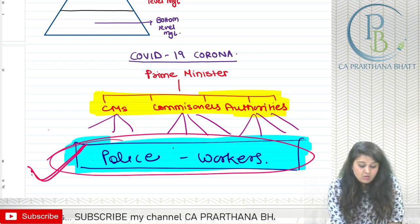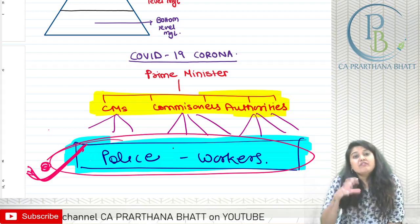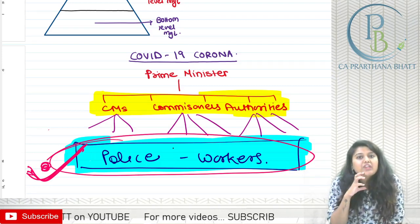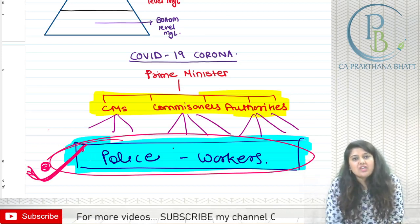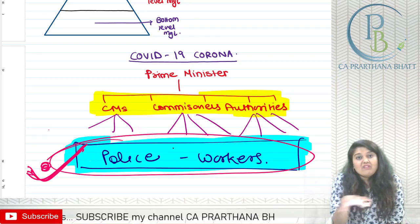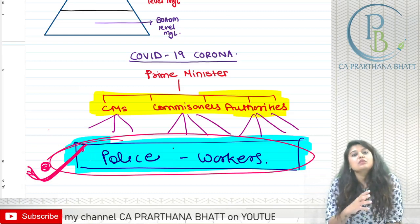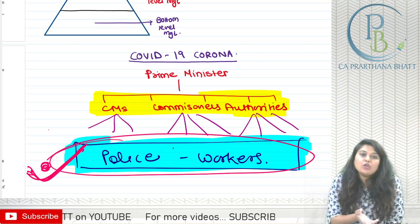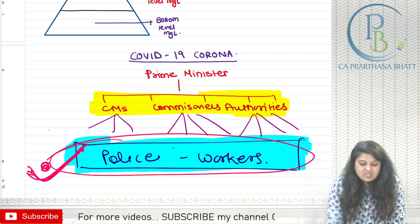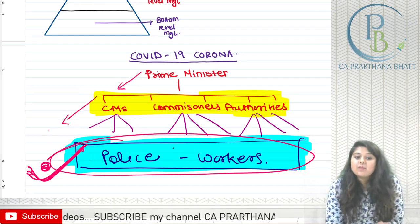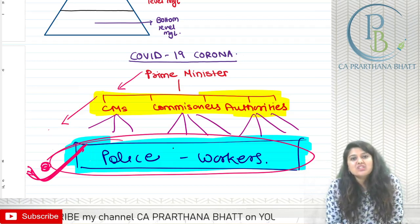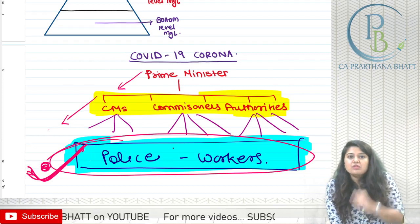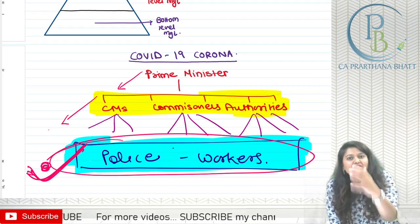At the bottom level, this is the stage where work is more than decision-making. These people are working hard to implement things. The Prime Minister has already given the rule book, so they already have ideas and guidelines — they just execute and get the work done.